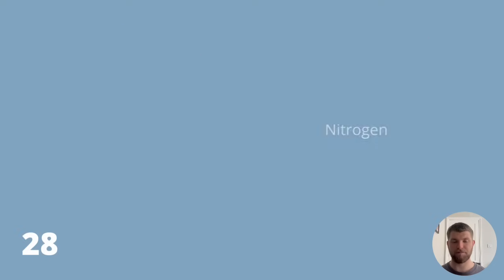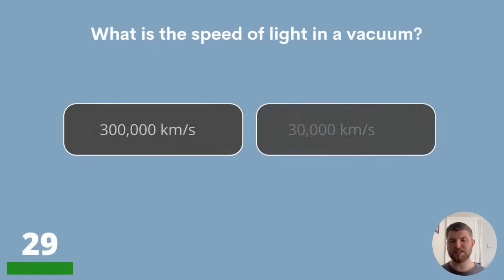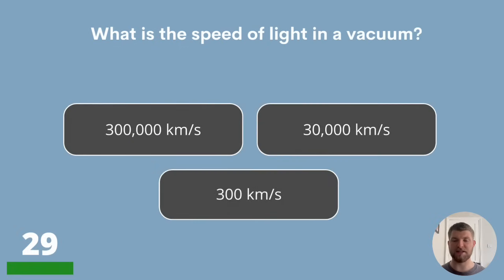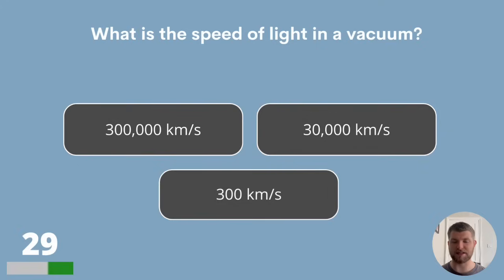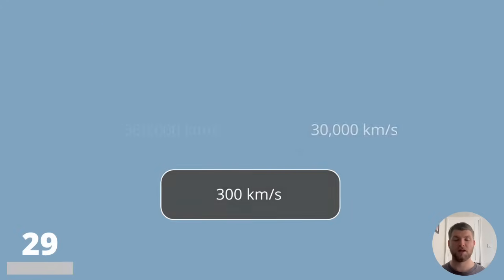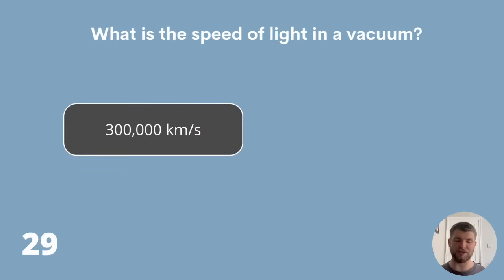Question 29. What is the speed of light in a vacuum? 300,000 km per second, 30,000 km per second or 300 km per second? The answer is 300,000 km per second.